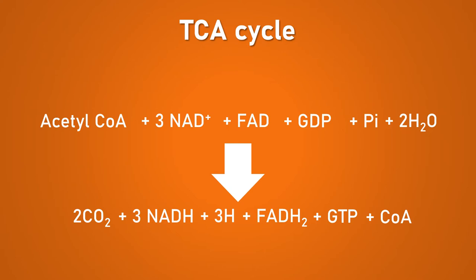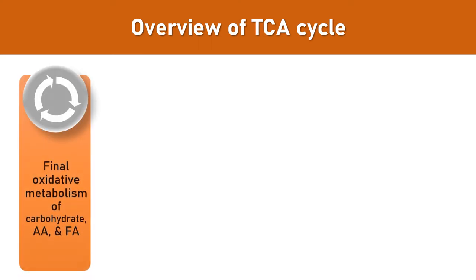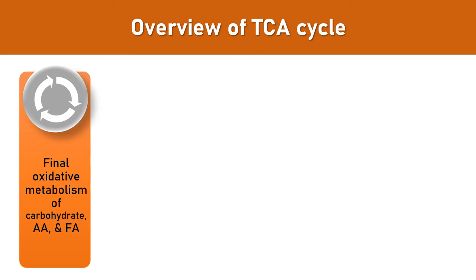Many intermediates can leave the cycle or enter the cycle as per metabolic need, making it a very high-traffic cycle. The TCA cycle, or citric acid cycle, is a common and final oxidative pathway for the metabolism of carbohydrates, amino acids, and fatty acids.